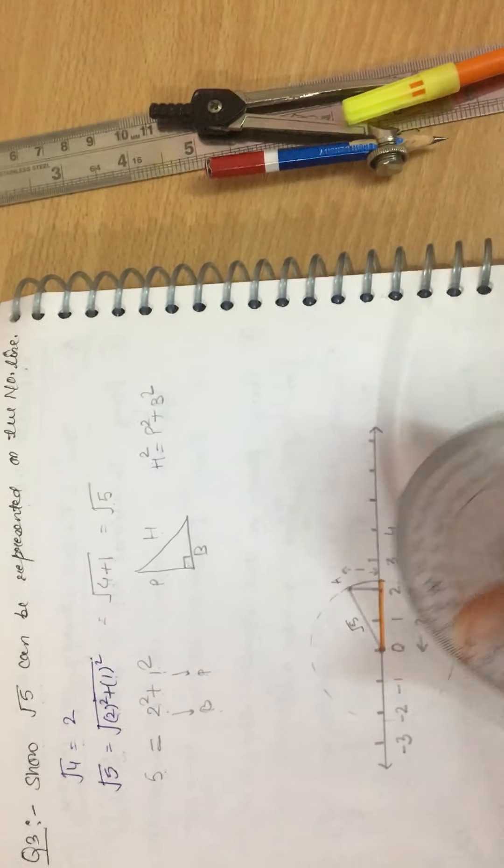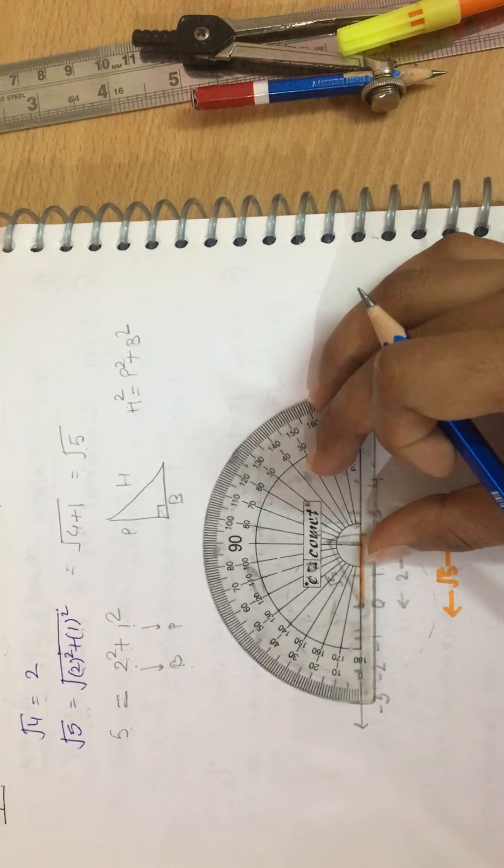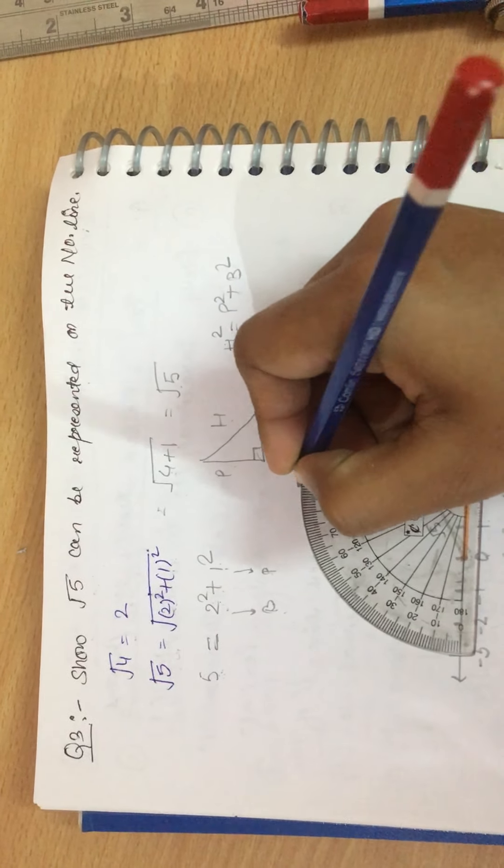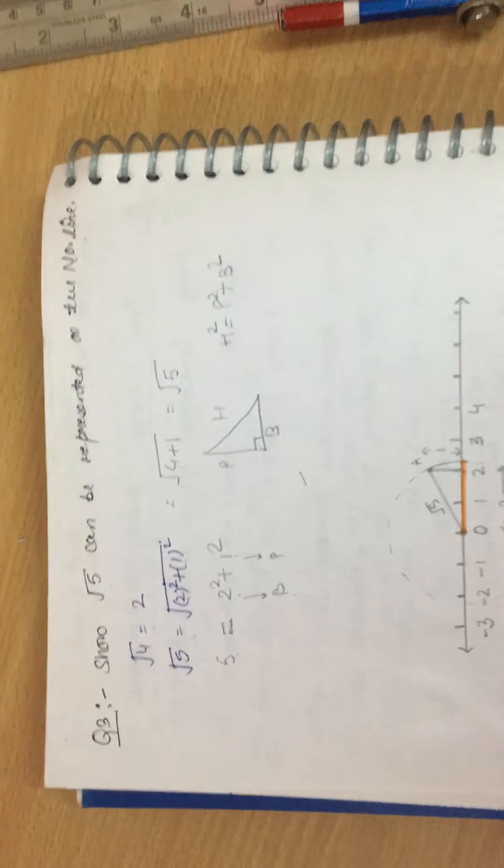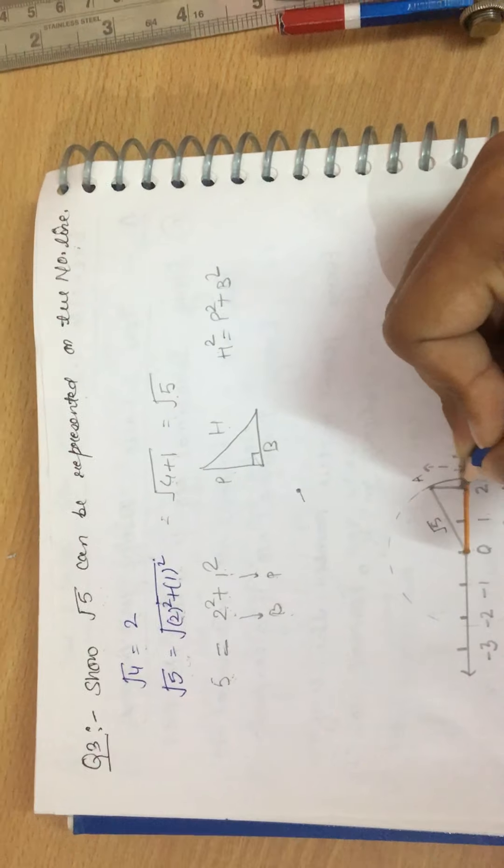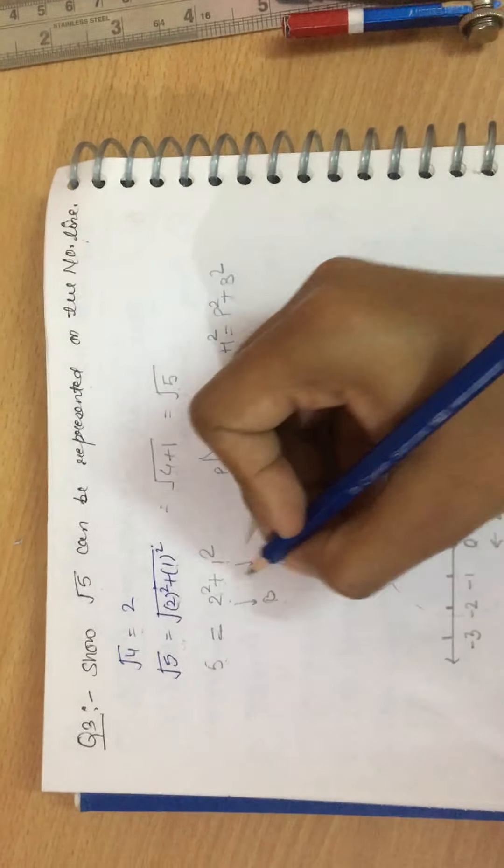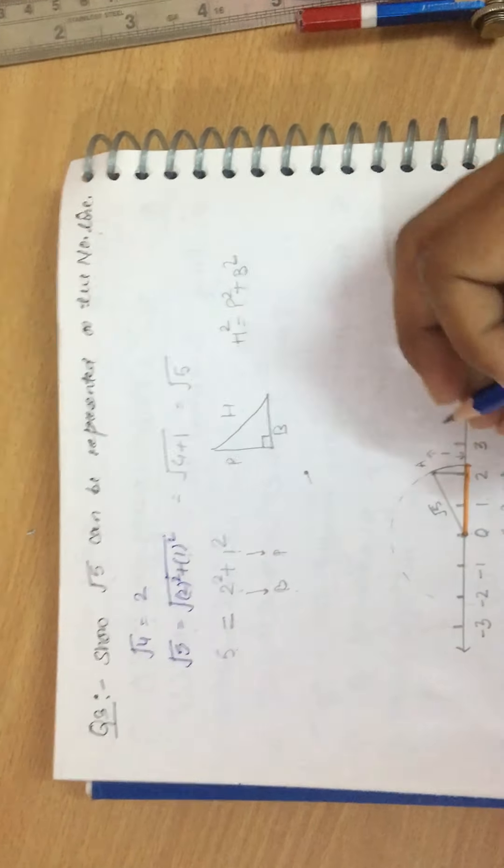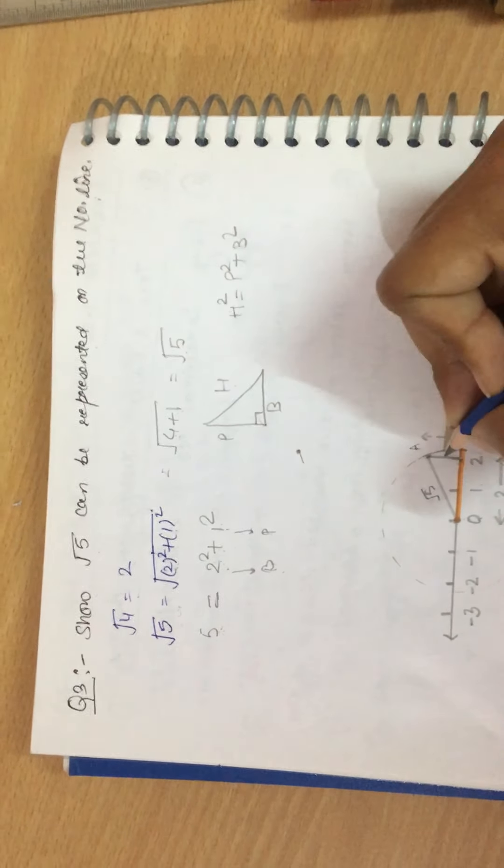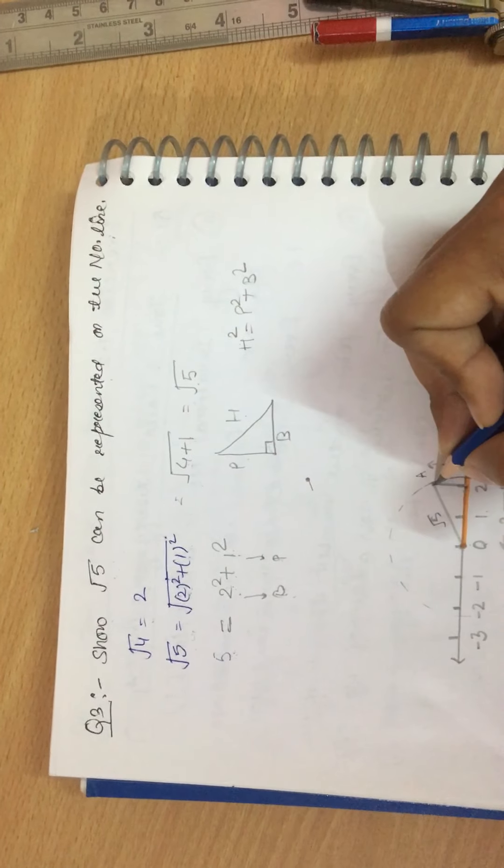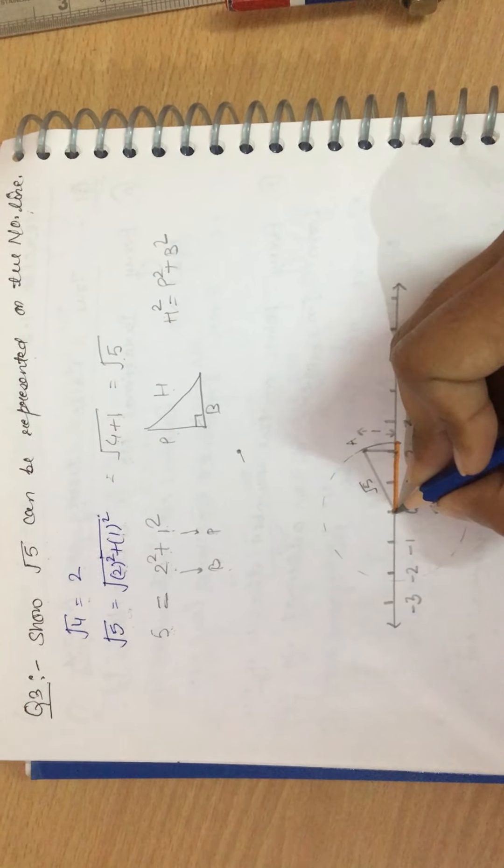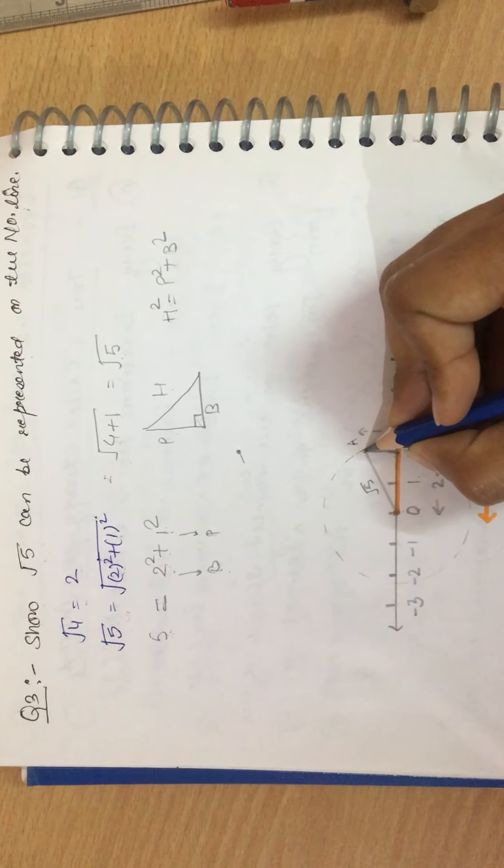We take the base as 2 units. We have drawn a line from this. The base is 2 units, and we draw a perpendicular from here.